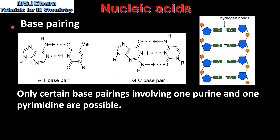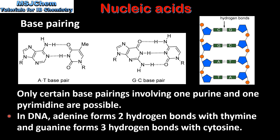Next is base pairing. Only certain base pairings involving one purine and one pyrimidine are possible. In DNA, adenine forms two hydrogen bonds with thymine and guanine forms three hydrogen bonds with cytosine. So on the left we have adenine which forms two hydrogen bonds with thymine, and on the right we have guanine which forms three hydrogen bonds with cytosine. In this diagram of DNA, which is a double stranded nucleic acid, we have the two strands which are sugar phosphate backbones held together by the hydrogen bonds between the nitrogenous bases. In DNA, cytosine always pairs with guanine and adenine always pairs with thymine.